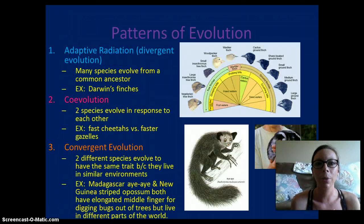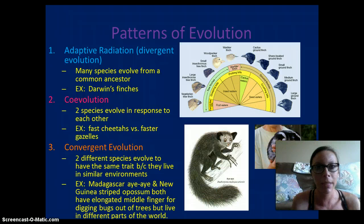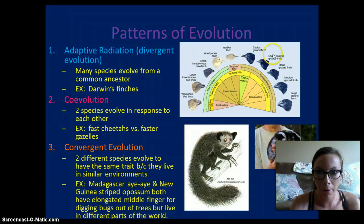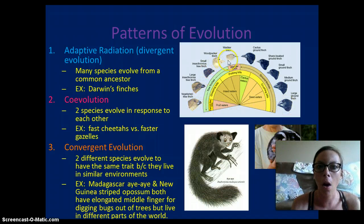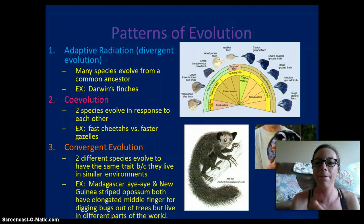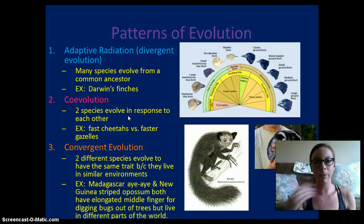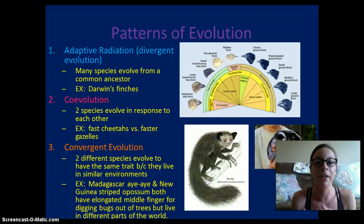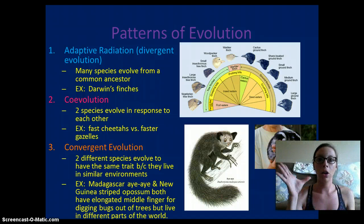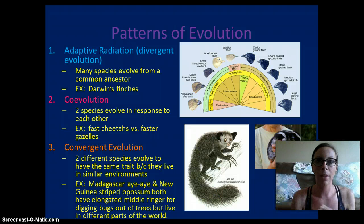There are different patterns of evolution. Adaptive radiation is what we've seen with the finches on the Galapagos Islands — many species evolved from a common ancestor, and the finches' beaks evolved based on the type of food that was available. Co-evolution is when two species evolve in response to each other — for example, a fast cheetah and a faster gazelle, or the claw of the crab and the snail developing a spikier shell. They are both evolving at the same time.